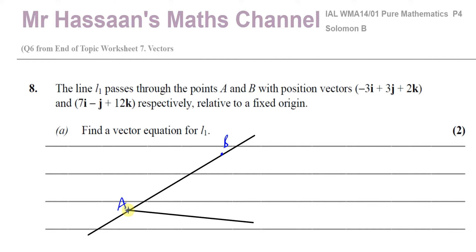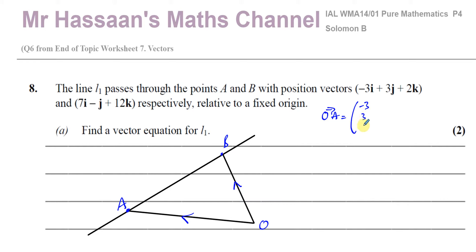It's always good to try to picture what's happening — it helps you to realise. We know the vector from O to A and O to B. O to A is the vector given — points A and B have position vectors minus 3, 3, and 2 for A, written in column form. And we know the vector from O to B, given as 7, minus 1, and 12. I like to write them in column form — it makes it easy for calculations.